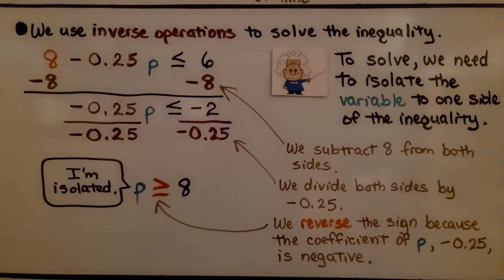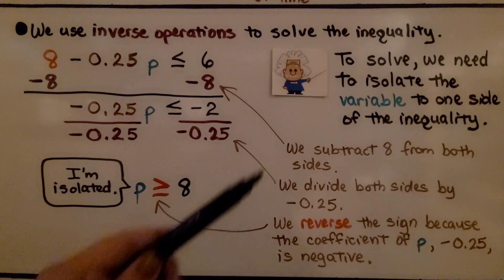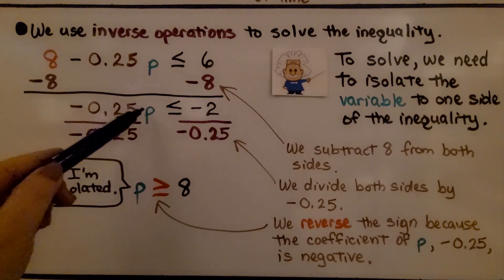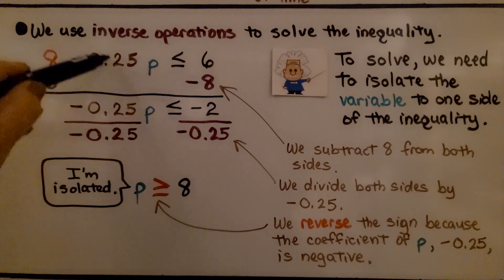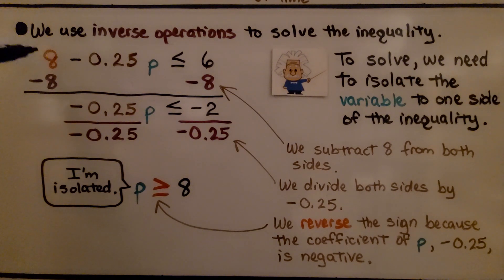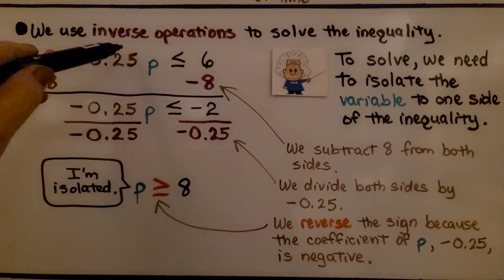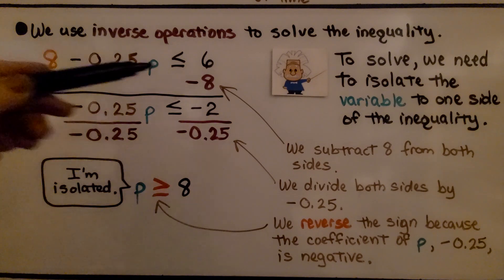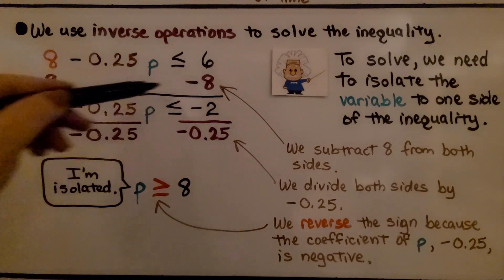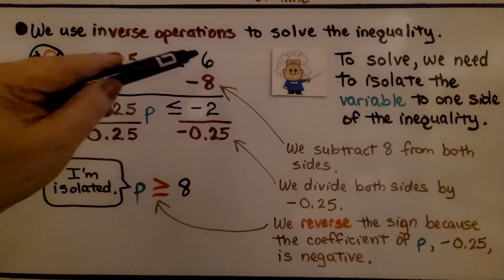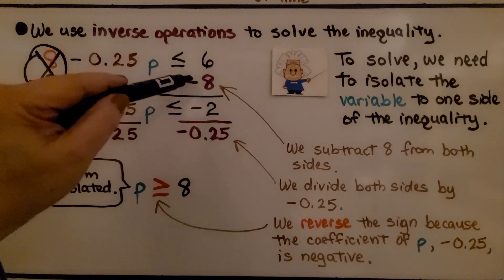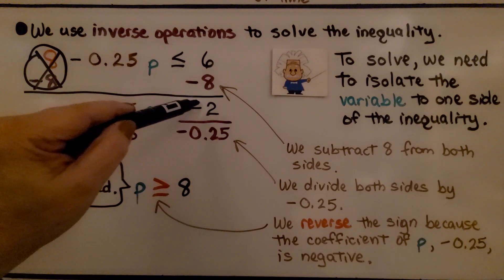We use inverse operations to solve the inequality, isolating the variable to one side. The coefficient of p is negative 0.25, so we leave it alone for now and address the constant 8 first. We subtract 8 from both sides, which creates a zero pair — plus 8 minus 8 equals 0. On the right side, positive 6 minus 8 gives us negative 2.